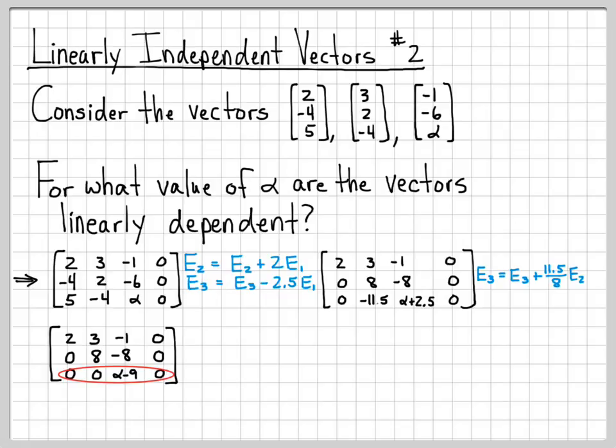And if we look at this third row, something interesting has happened. I have zeros everywhere except for alpha minus 9. So look what happens.